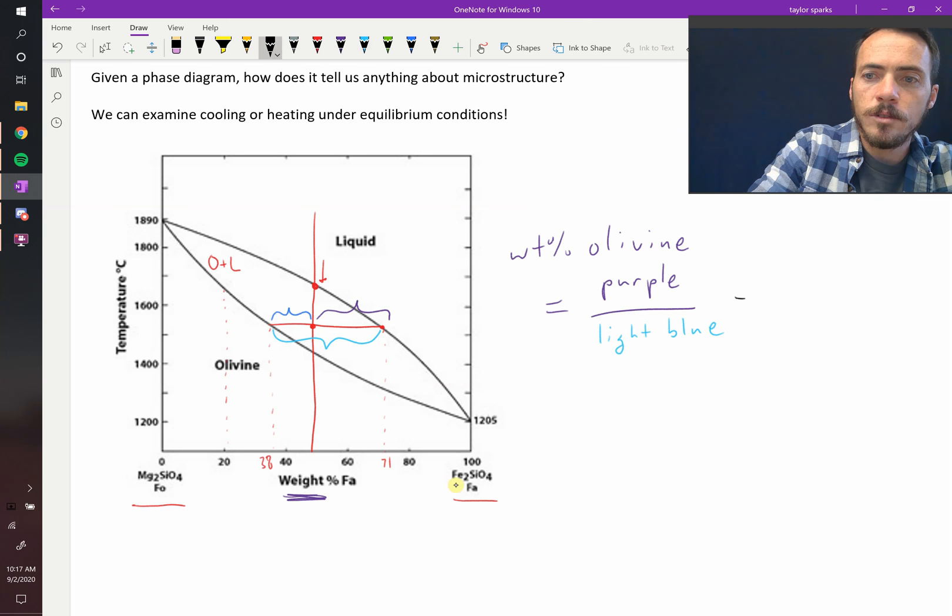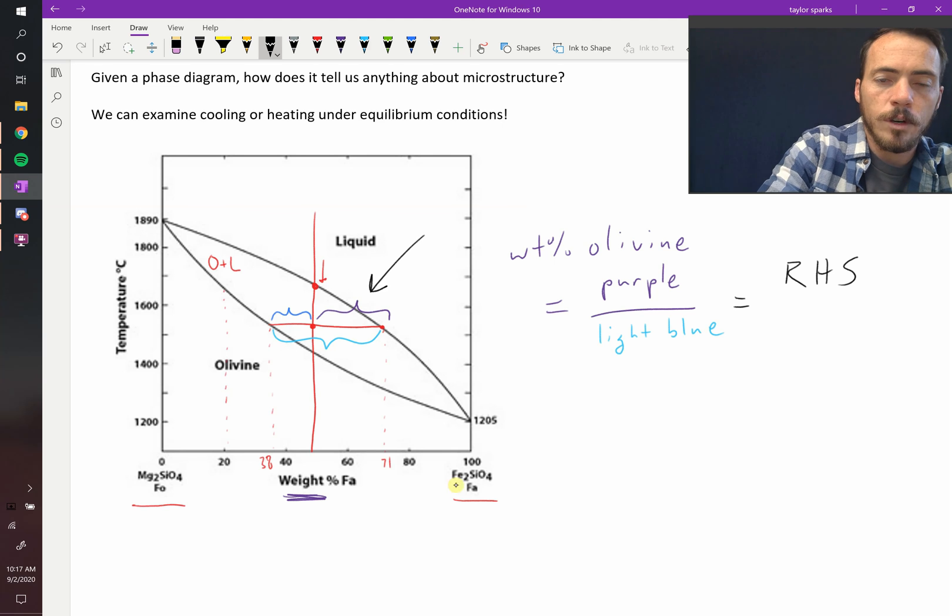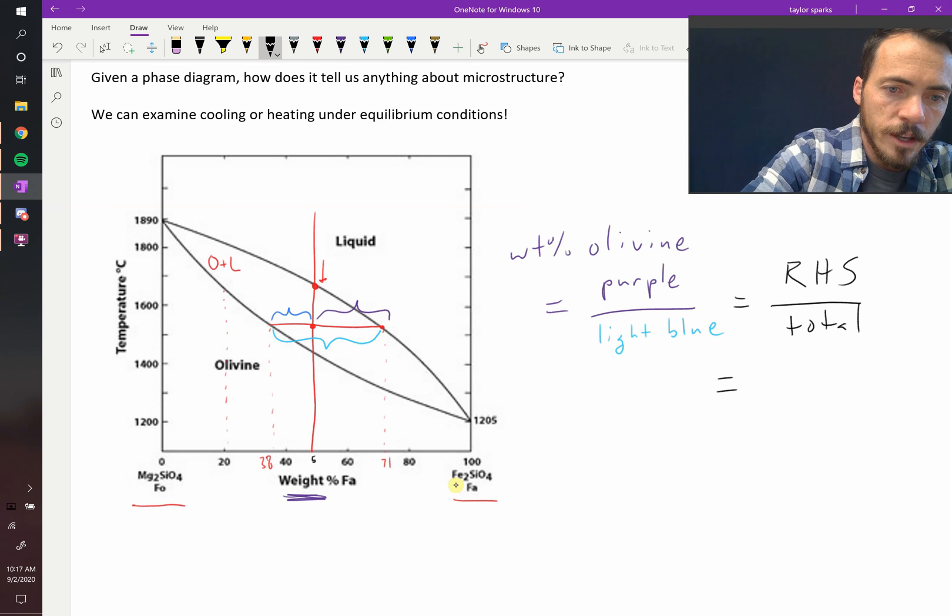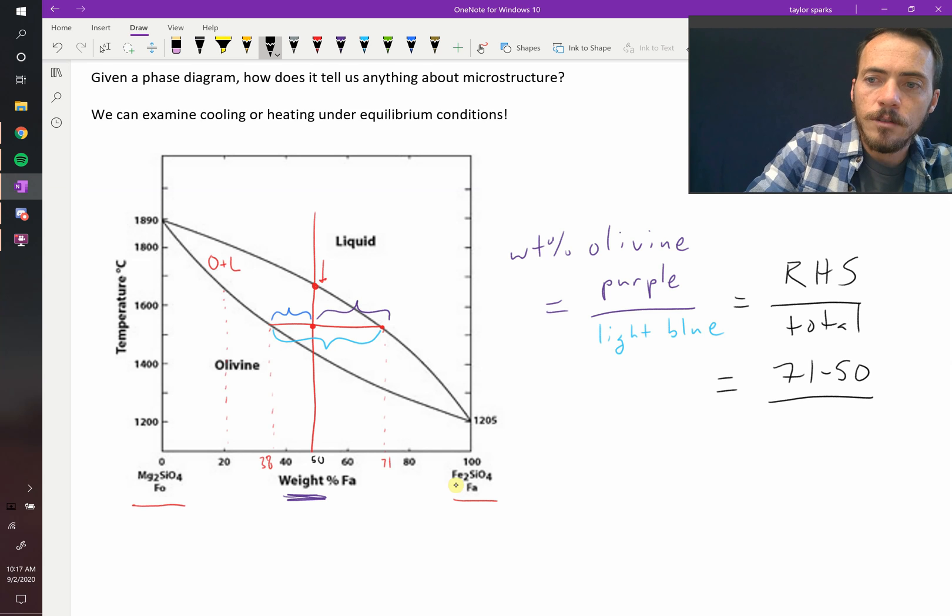Or in other words, it's going to be equal to the right-hand side. Over here, this one on the right-hand side, divided by the total. Or mathematically, this would be, if this was initially at 50 percent, the initial composition, then the right-hand side would be 71 minus 50, and then the total length would be 71 minus 38.